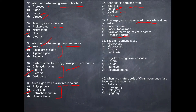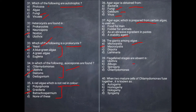Next question: The giants among algae are which? The largest forms of algae are Macrocystis. The correct answer is B.